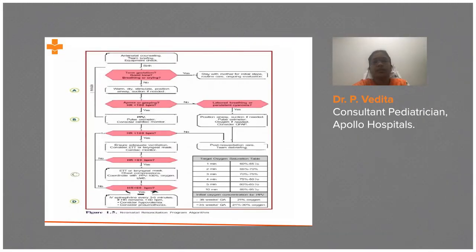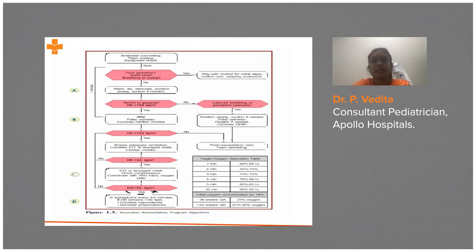This is the algorithm which we follow — this is the NRP. Here you see airway. It is divided into four different stages. First one is airway — A for airway.